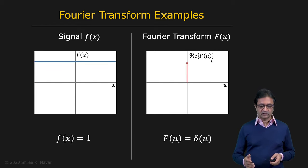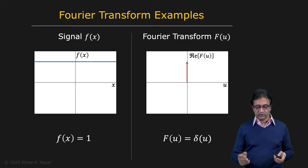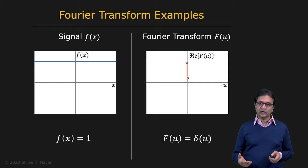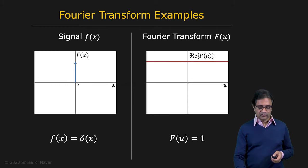Now let's take a look at the constant — a flat signal. A flat signal has no frequencies, or another way to think about it: it has only one frequency, which is zero. Therefore, you have a delta function at zero. And what if you have a signal which is a delta function itself? It turns out you need equal amplitudes of sinusoids of all frequencies to recreate that delta function, so the Fourier transform is flat — all frequencies are needed.